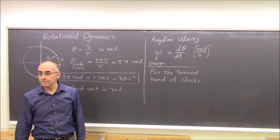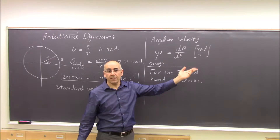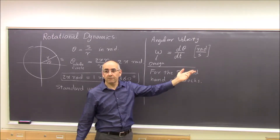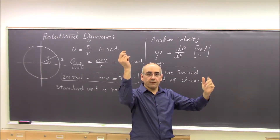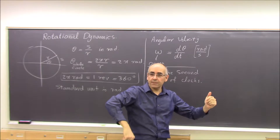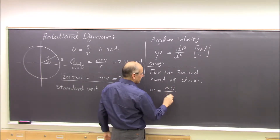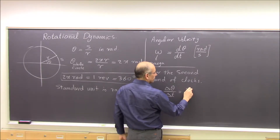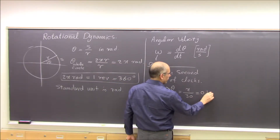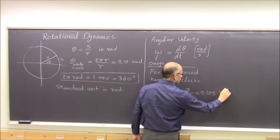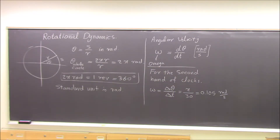Take some Δt and the corresponding Δθ and divide. For example, in 30 seconds the second hand goes from 12 to 6, turning half a circle, which is π radians. So omega equals Δθ/Δt = π/30, which is about 0.105 radians per second. That's the angular speed of the second hand. You can calculate a similar value for the minute hand, which is much slower, and the hour hand.